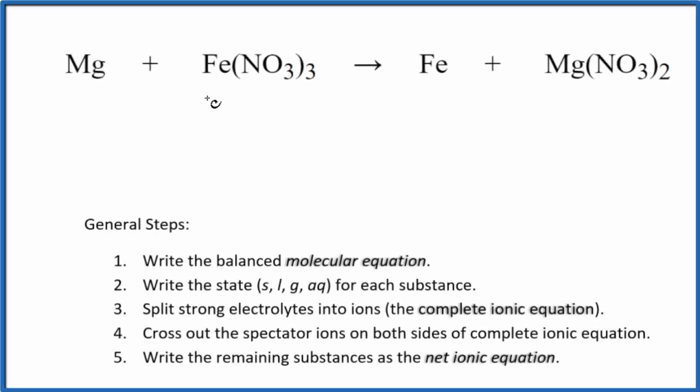In this video, we'll write the balanced net ionic equation for Mg plus Fe(NO3)3. This is magnesium plus iron 3 nitrate. The first thing we do with net ionic equations is balance the molecular equation. This is the molecular equation up here.